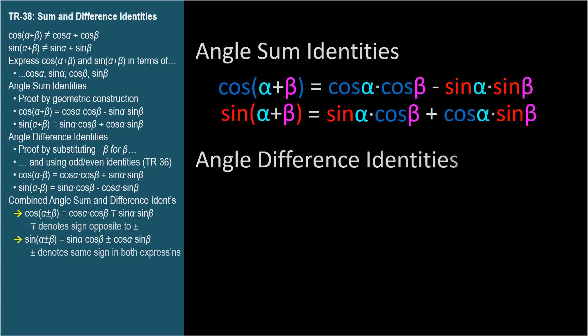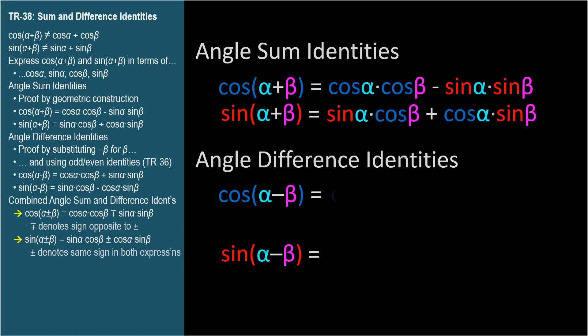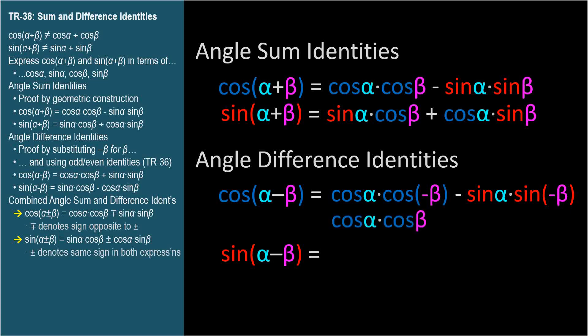There are also angle difference identities, for the cosine and sine of alpha minus beta. We start with the angle sum identities and simply plug in negative beta for the second angle, because adding a negative angle is the same as subtracting a positive angle. We simplify terms including cosine and sine of negative beta using the even-odd identities from TR-36. Cosine of negative beta equals cosine beta, so the left term is cosine alpha cosine beta. Sine of negative beta equals negative sine beta, so the second term becomes plus sine alpha sine beta.